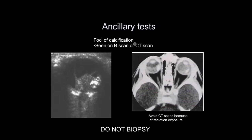Ancillary tests: ultrasound is done during the examination under anesthesia, and you see calcification — a big mass in the eye with areas of calcification. CT scan shows bilateral cases with calcified masses in both eyes. But these days we avoid CT scans because of radiation exposure, as these children have a cancer syndrome and you don't want to give them excess radiation.